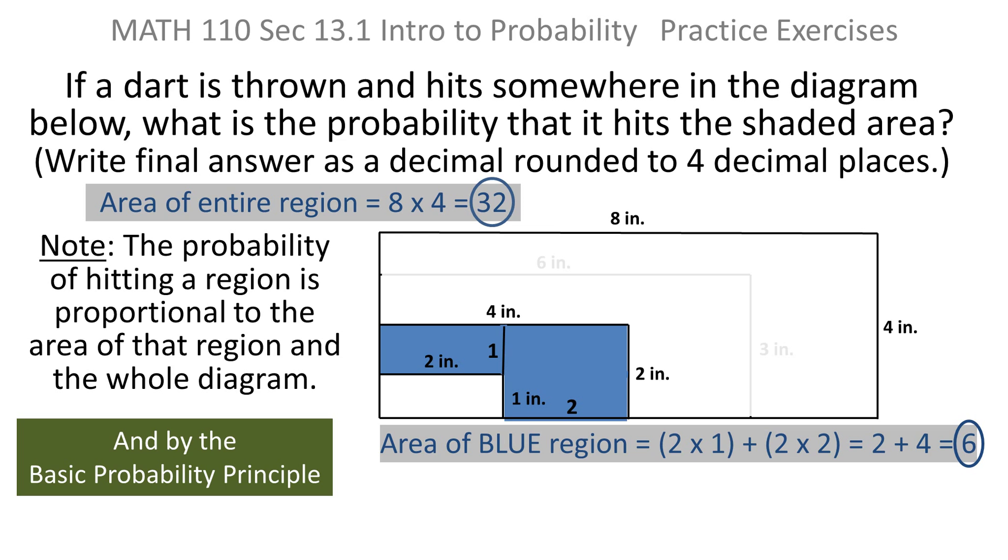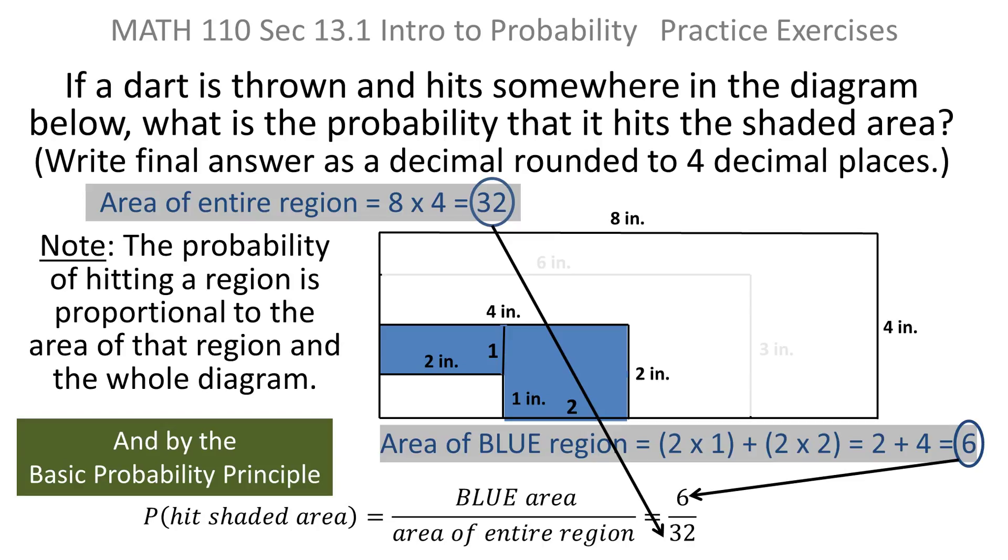And by the basic probability principle and actually this little note, I know that the area of the shaded region over the area of the entire region gives me the probability of hitting the shaded area. That's what the note says. Well, we just calculated the area of the blue region to be six, the area of the entire region to be 32.